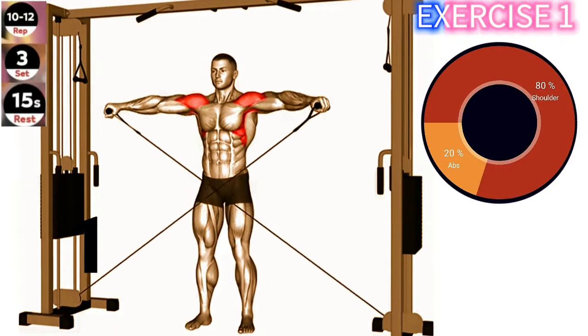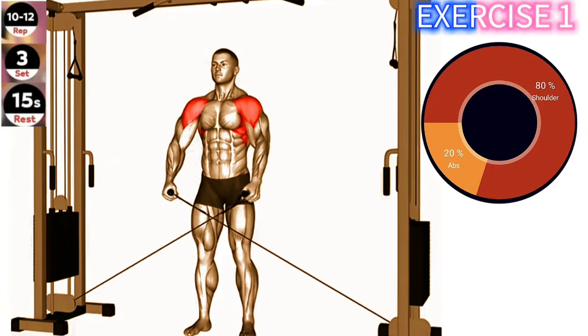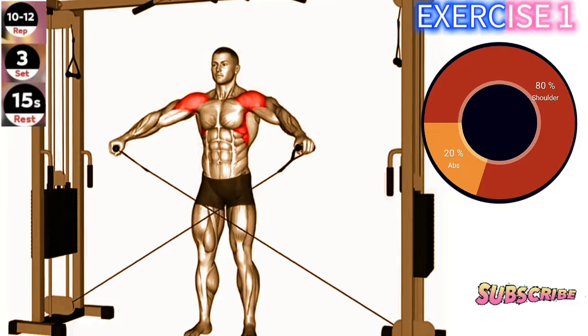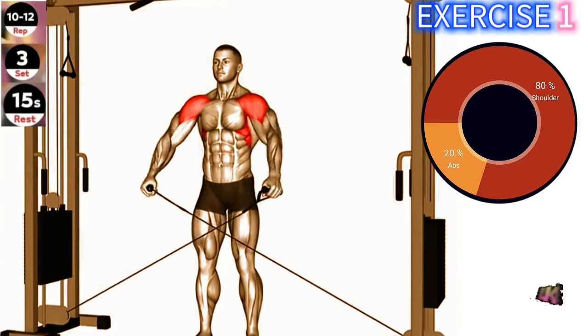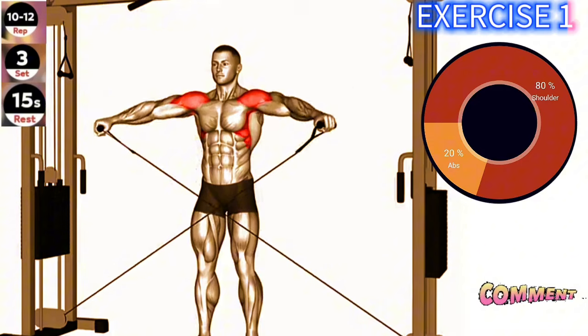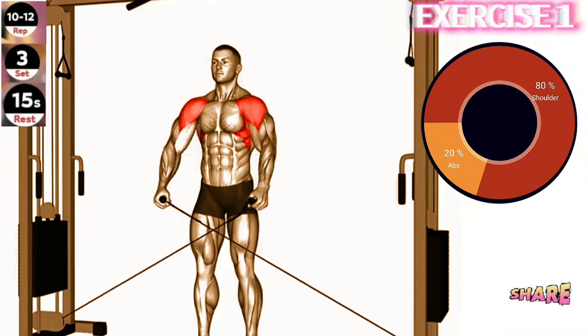Exercise 1. Cable Lateral Raise. Maintain a slight bend in your elbows throughout the exercise to avoid excessive stress on your shoulder joints. Focus on using your side deltoids to lift the weight. Set up a cable machine with the handles positioned at the lowest position.